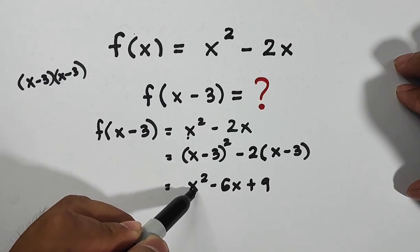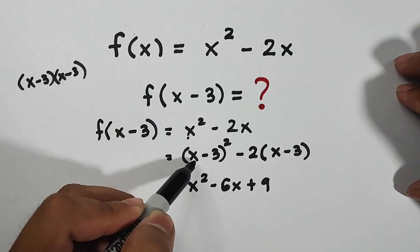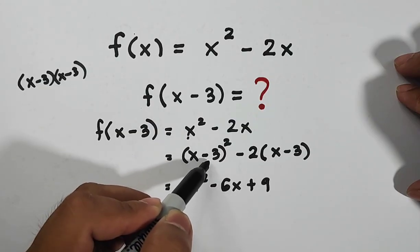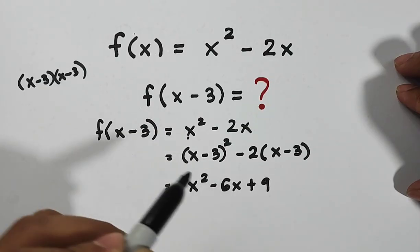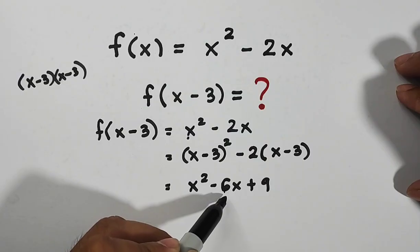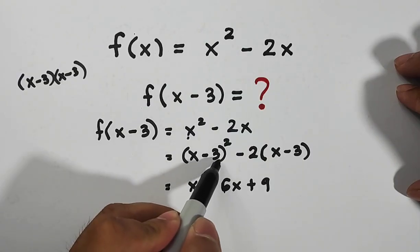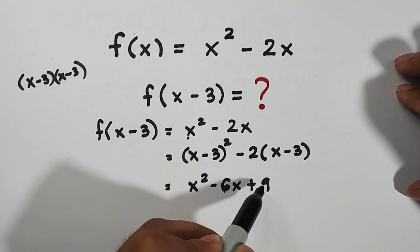Square the first term, that is x squared. Multiply the first and second, x times negative 3 is negative 3x, times 2, that is negative 6x. Then your last term, 3 squared, and that is equal to 9.